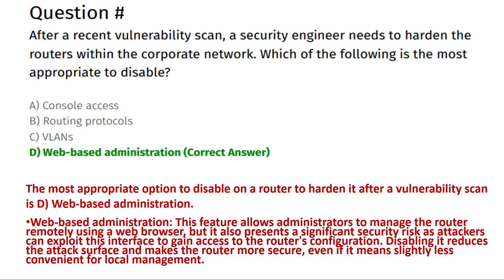Next question: after a recent vulnerability scan, a security engineer needs to harden the router within the corporate network. Which of the following is most appropriate to disable? Option A: console access. Option B: routing protocols. Option C: VLANs. Option D: web-based administration.